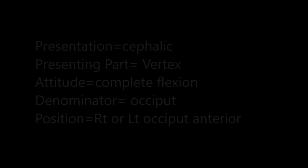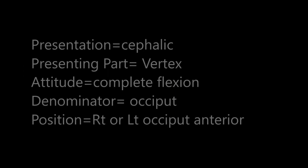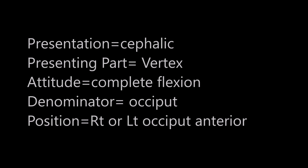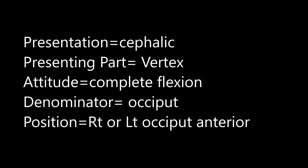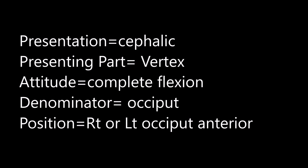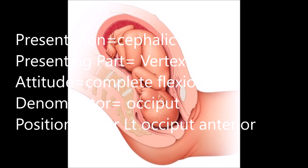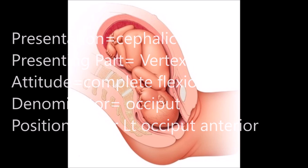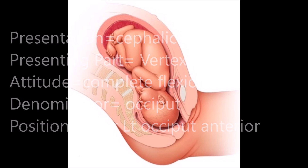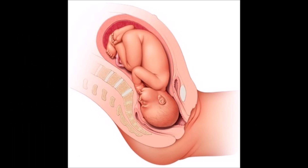This is the basic parameter known as normal mechanism. So overall: Lie is longitudinal, Presentation is cephalic, Presenting part is vertex, Attitude is complete flexion, Denominator is occiput, and Position is Right or Left Occiput Anterior — of which Left Occiput Anterior is the most common.